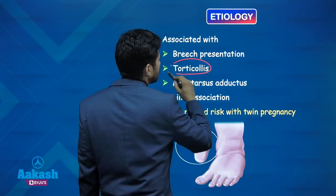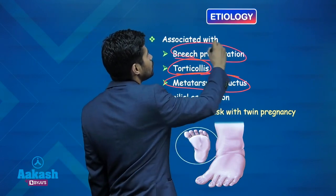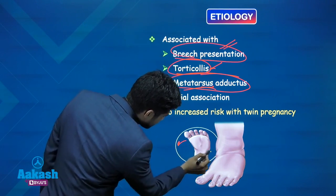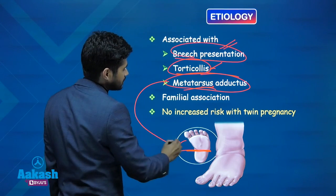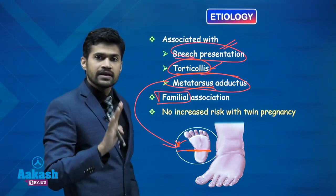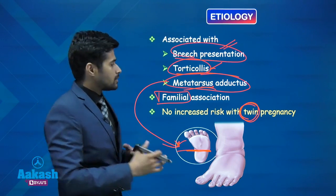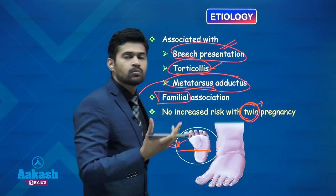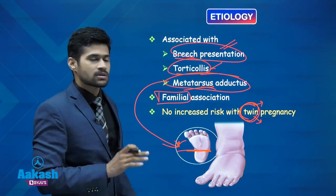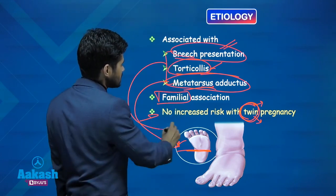With oligohydramnios you will also see torticollis, metatarsus adductus, and oligohydramnios is also associated with breech presentation. So DDH is associated with breech, torticollis (twisted neck), and metatarsus adductus — which means adduction of the foot at the metatarsal level. DDH has a familial association, but there is no increased risk in twin pregnancy despite more fetal volume inside the uterus. In oligohydramnios the patient can have DDH. So: firstborn female child, crowding phenomenon, oligohydramnios — and associated abnormalities include these conditions.